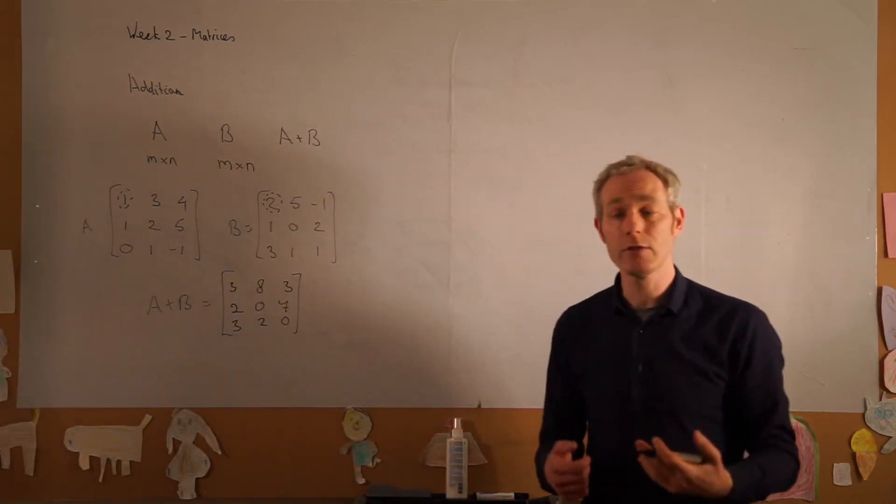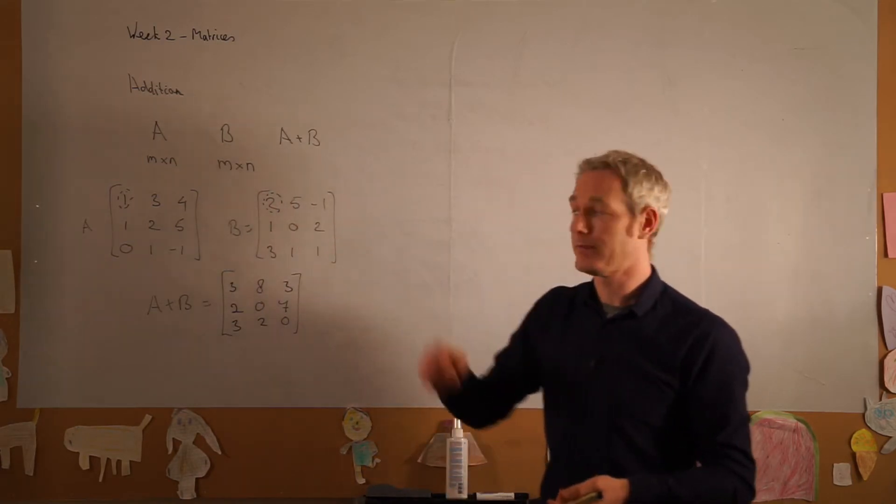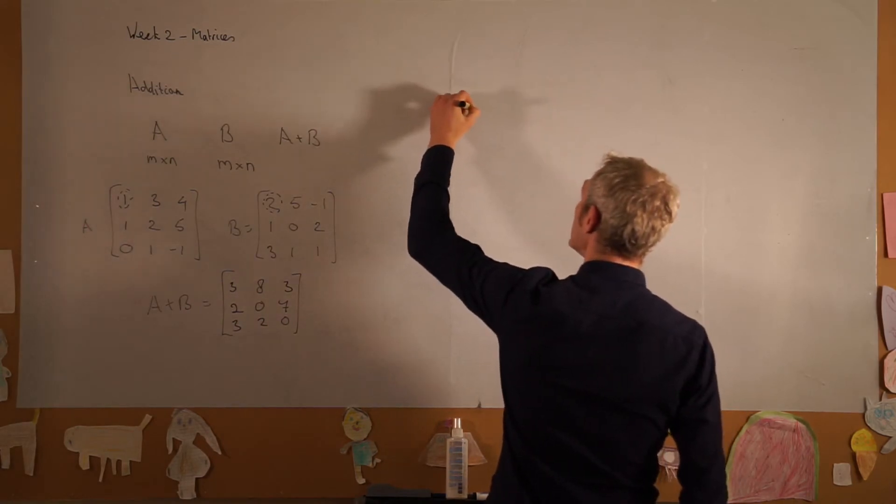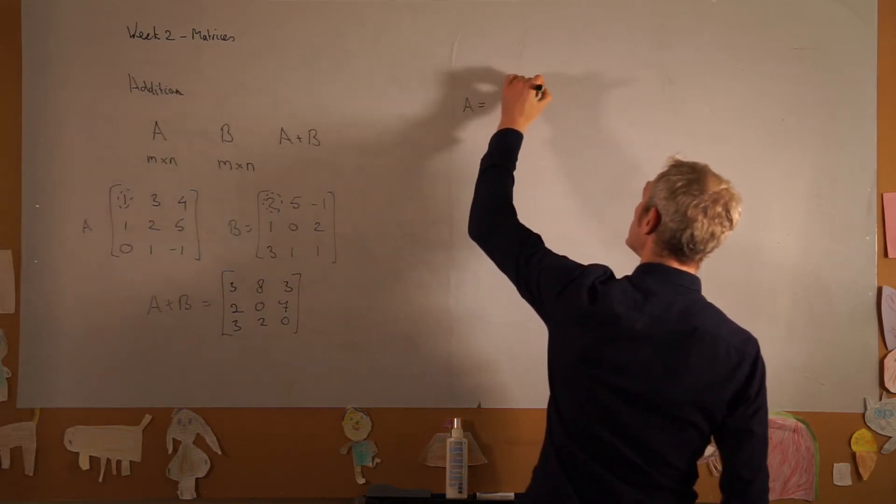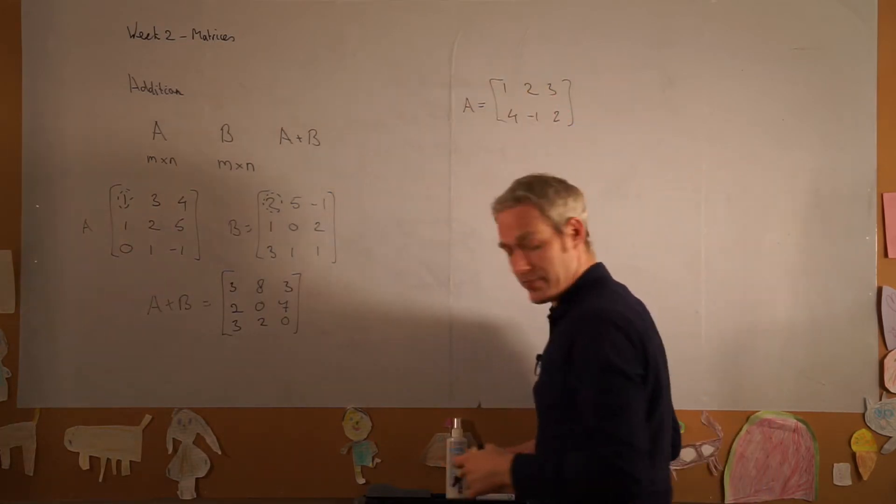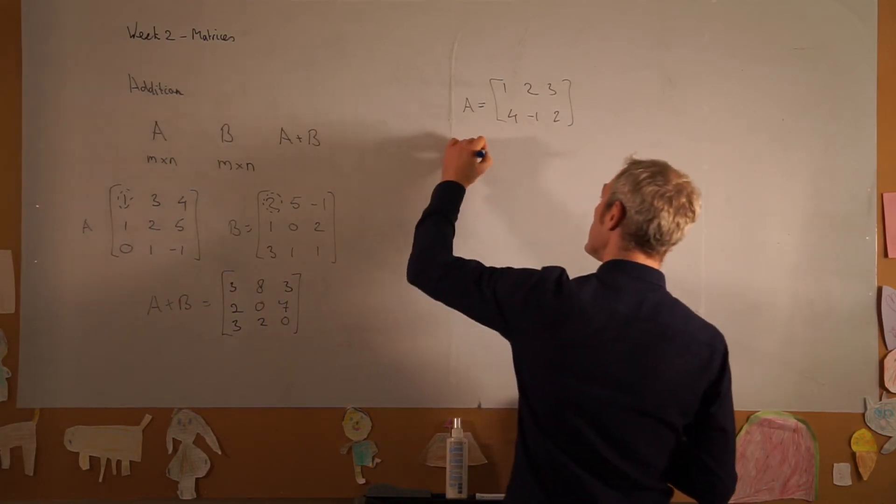So adding two matrices together is the same as adding each element. Now if we have a matrix A, let's take 1, 2, 3, 4, -1, 2, we can multiply this matrix with a constant.